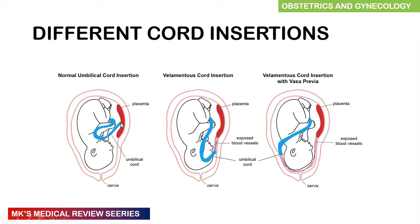Here is a normal cord insertion stemming from the placental disc. With a filamentous cord insertion, the umbilical cord stems from the membranes with some exposed blood vessels — but if those vessels are not running over the cervix, there is no risk of vasa previa. However, when blood vessels traverse the cervix, there is a great risk of vasa previa, especially when the membranes rupture and these blood vessels can also rupture.